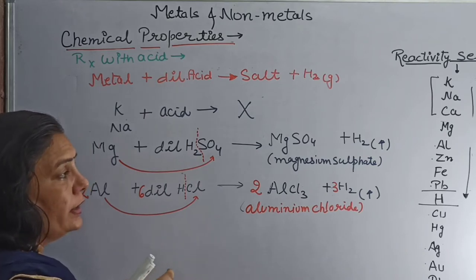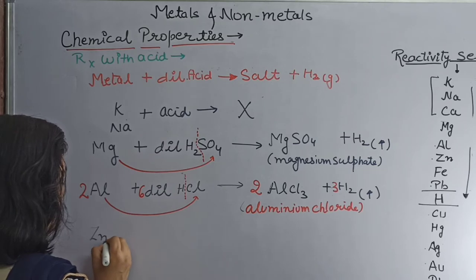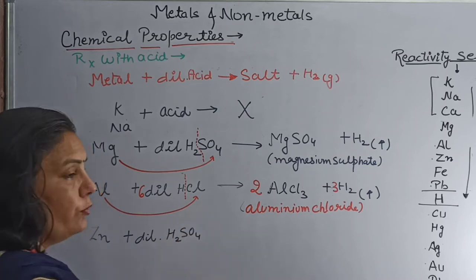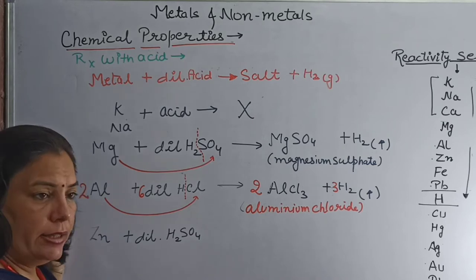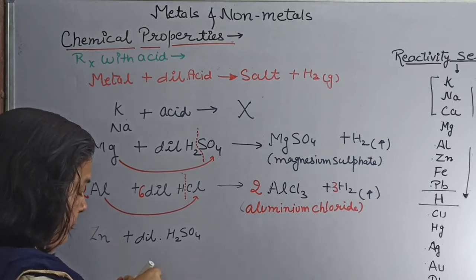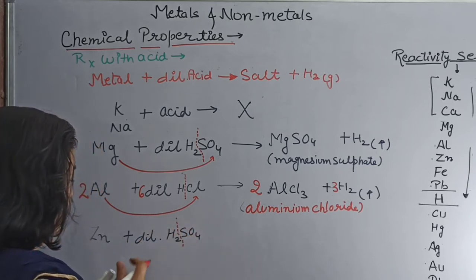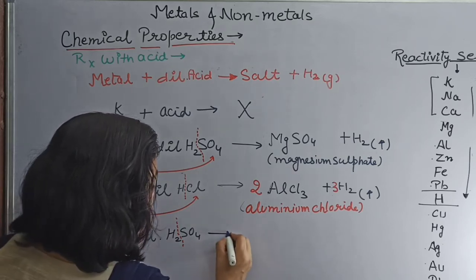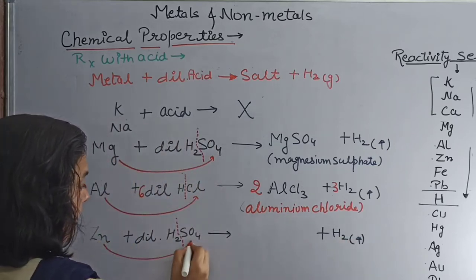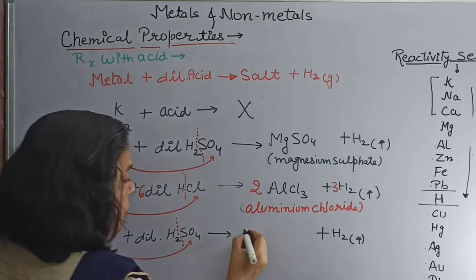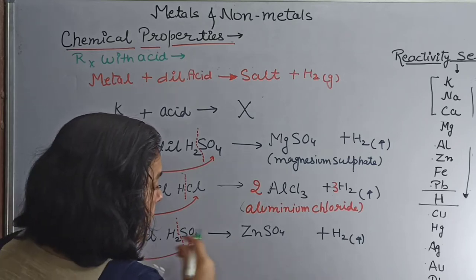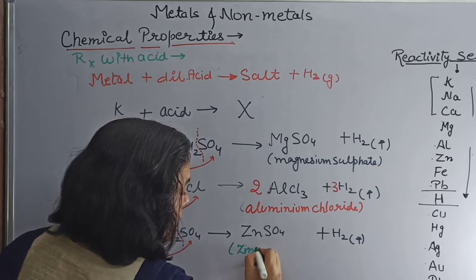Next, when zinc granules react with dilute sulfuric acid — we use dilute acid because the rate of reaction is very vigorous. Divide acid into two parts: hydrogen and sulfate. Hydrogen gas is evolved. Add zinc with the sulfate (anion) part — ZnSO4, zinc sulfate, is formed. The reaction is already balanced.